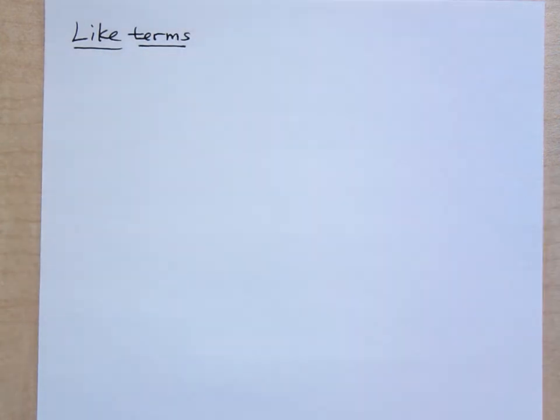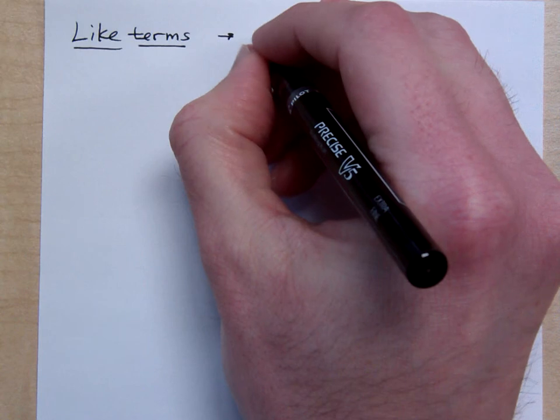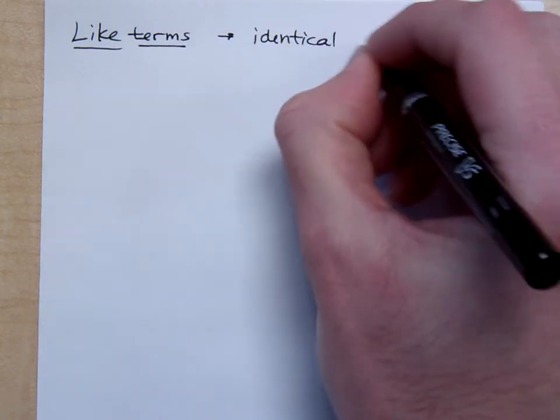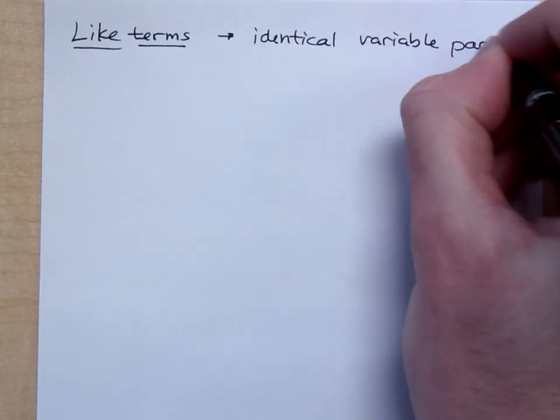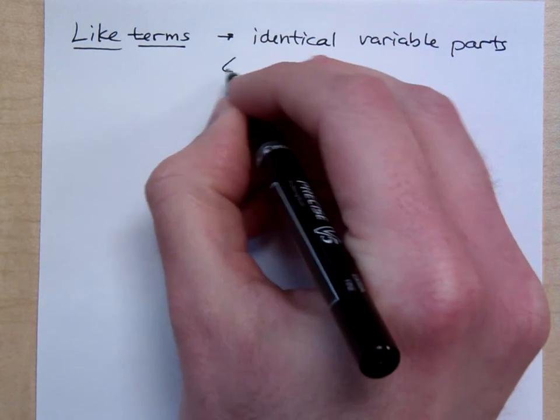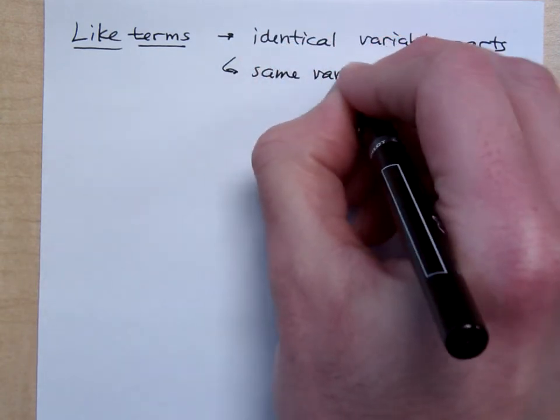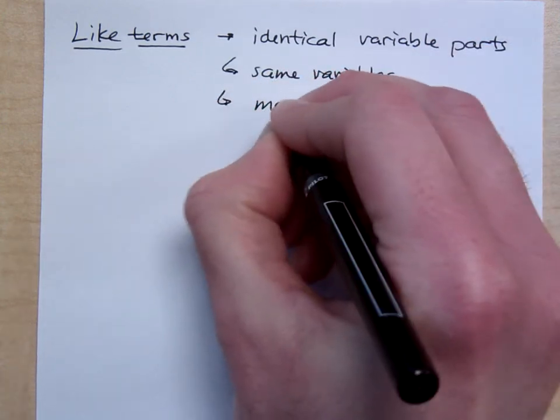Let's talk about like terms. This is not how we overuse the word like - like, you know how we always say like. No, this is like terms. These are terms that are like. And the thing with like terms is that they have identical variable parts.